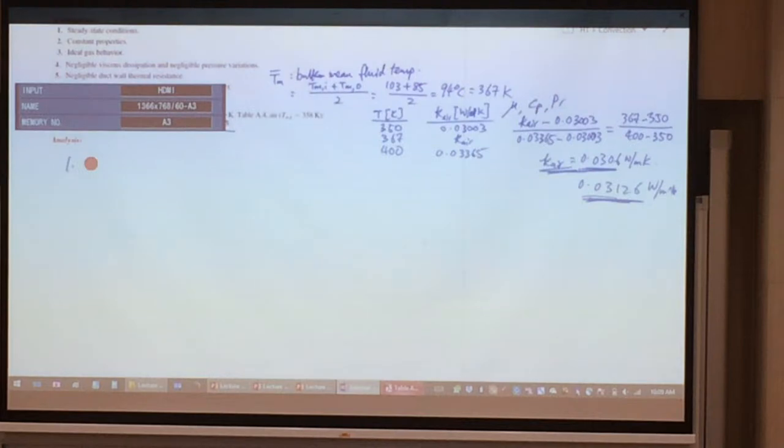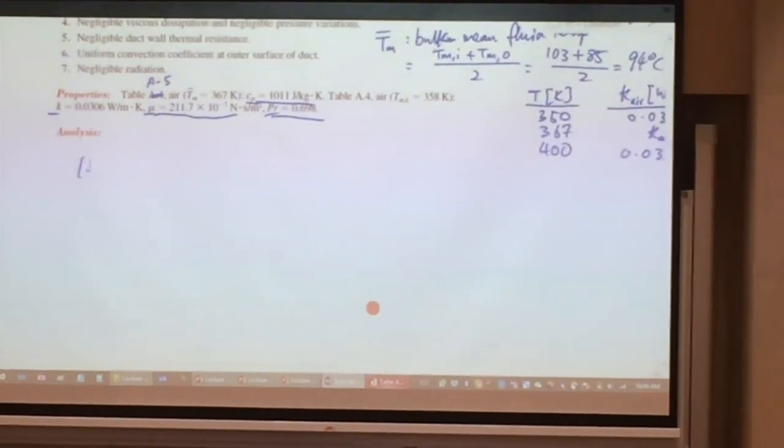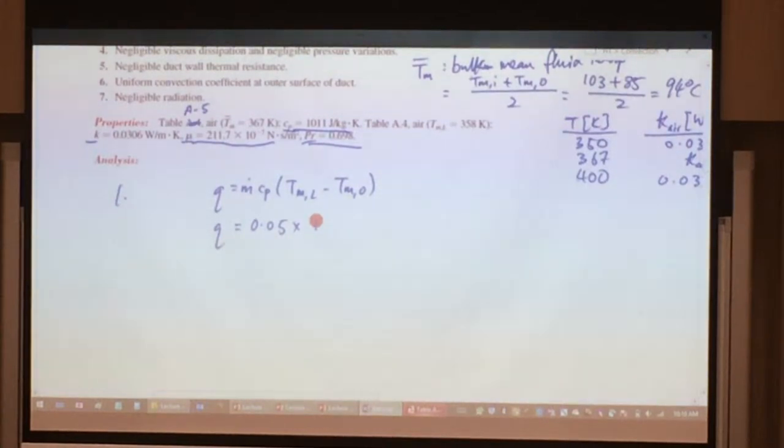I'm going to write that set of equations now. That's Q equal to M dot C_D and the change in the temperature, so T_mL minus T_m0. That will be equal to the mass flow rate given to us, 0.05, and the interpolated value for your specific capacity is 1011.